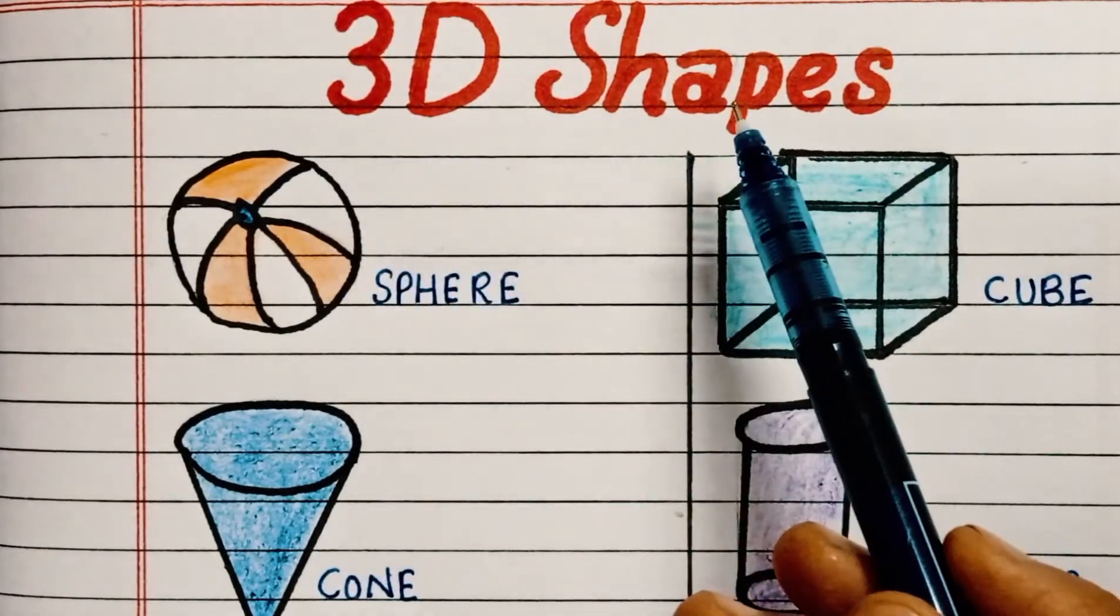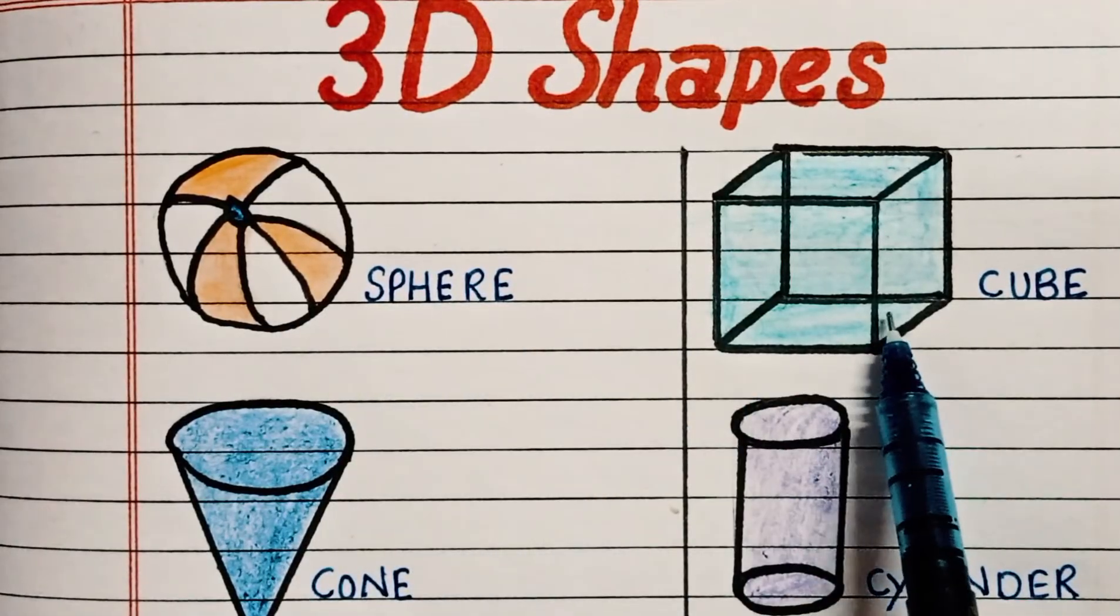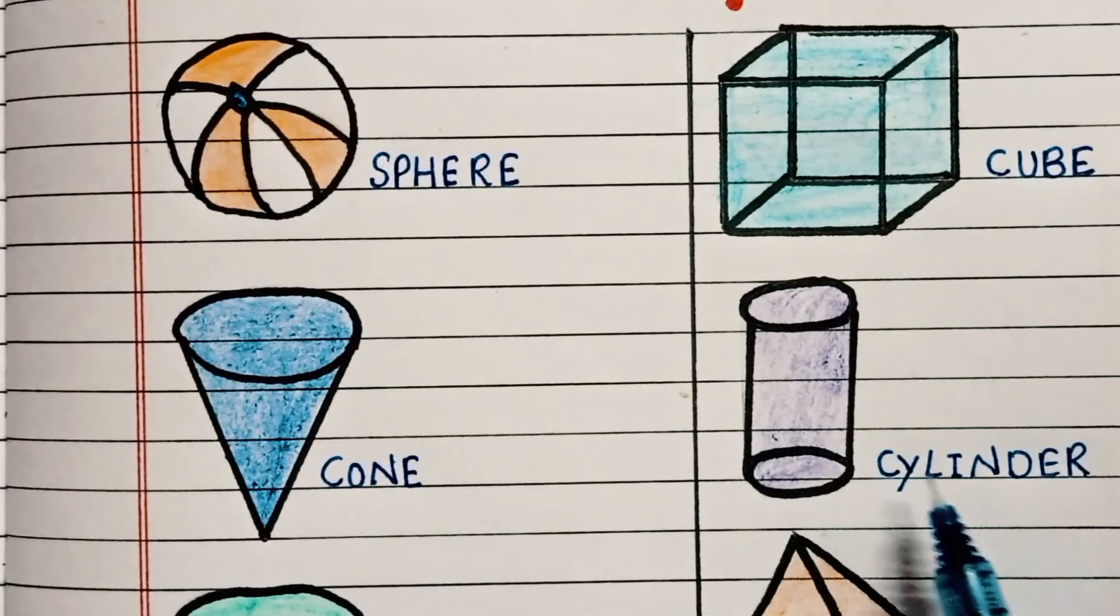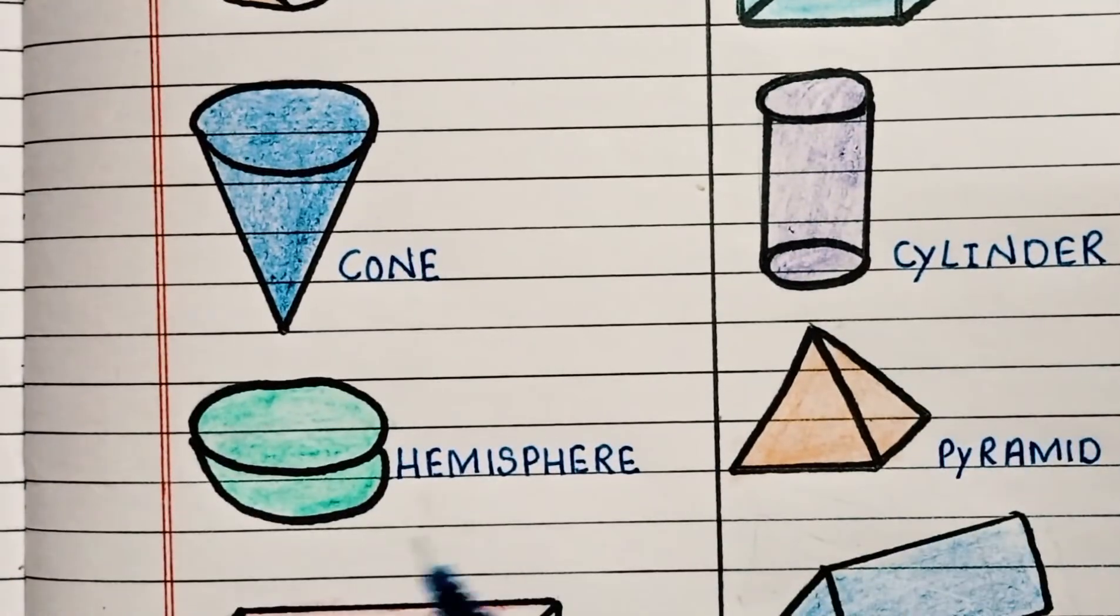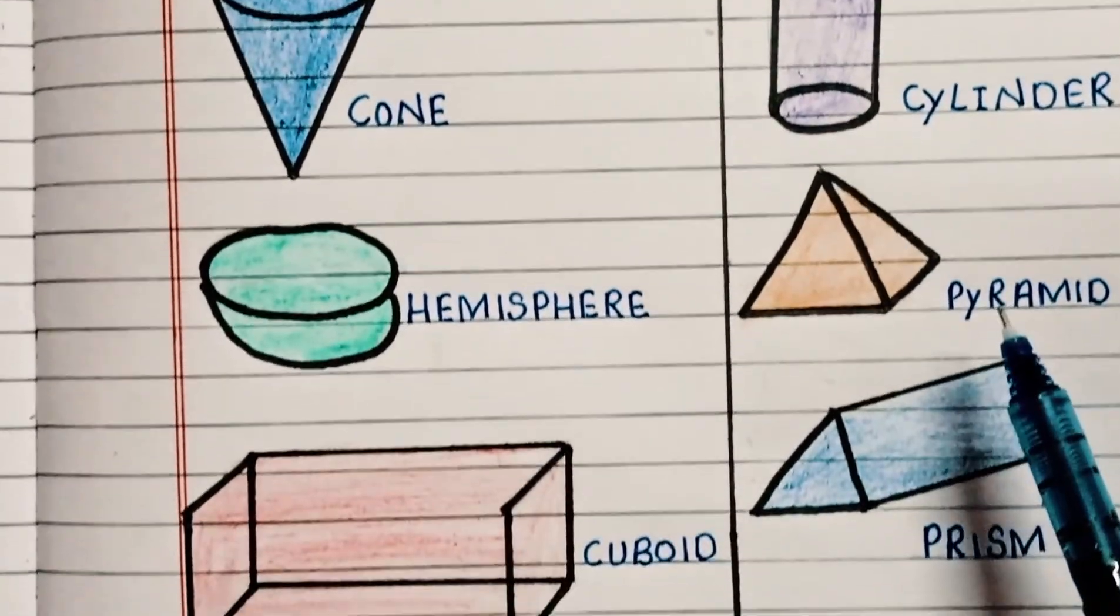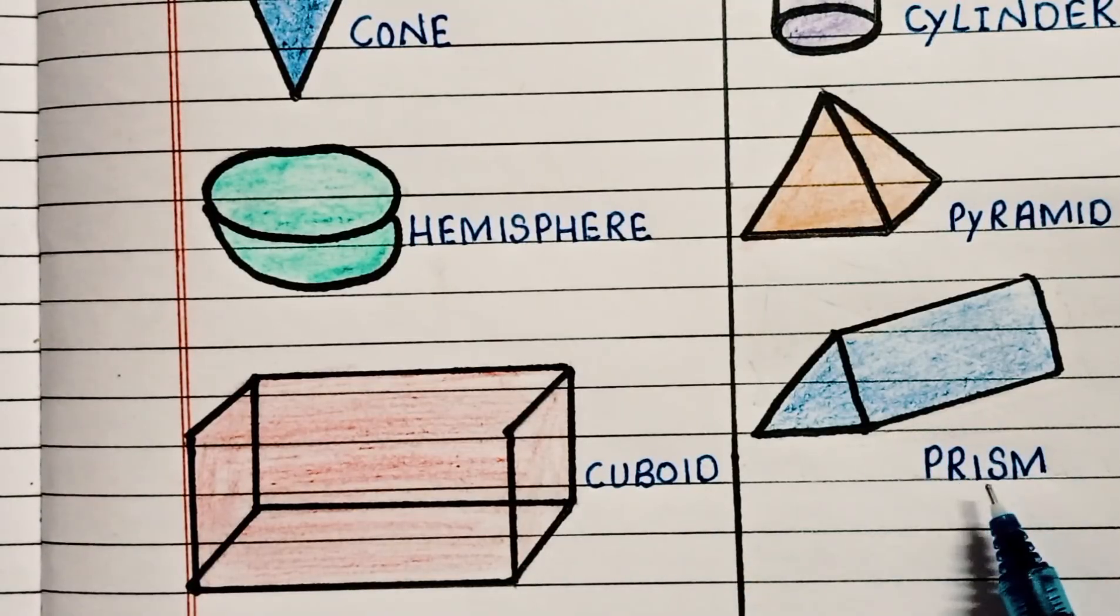Now let's see 3D shapes. Sphere shape. Cube shape. Cone shape. Cylinder shape. Hemisphere. Pyramid shape. Cuboid shape. Prism shape.